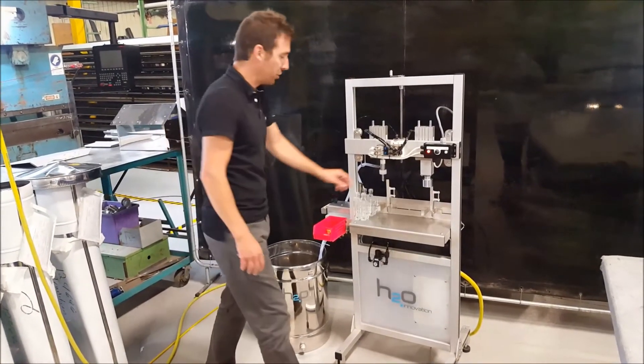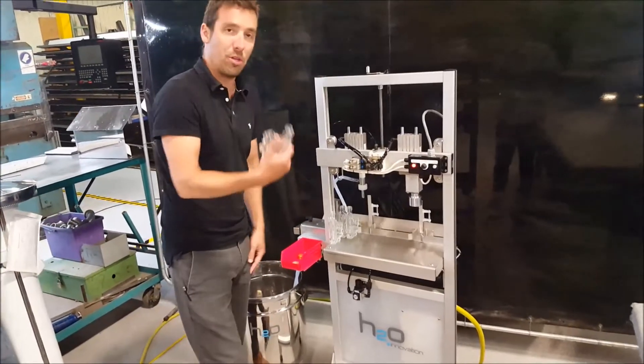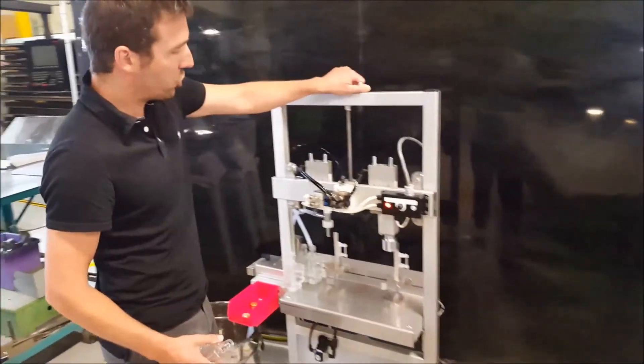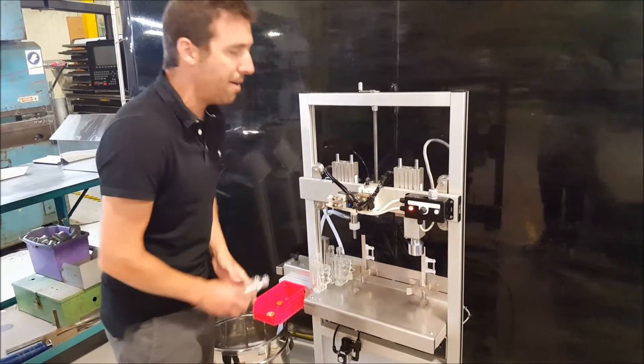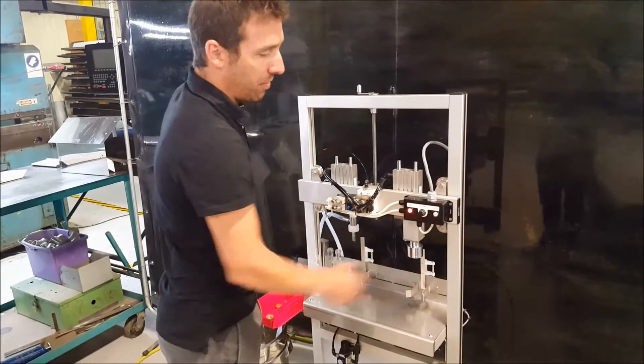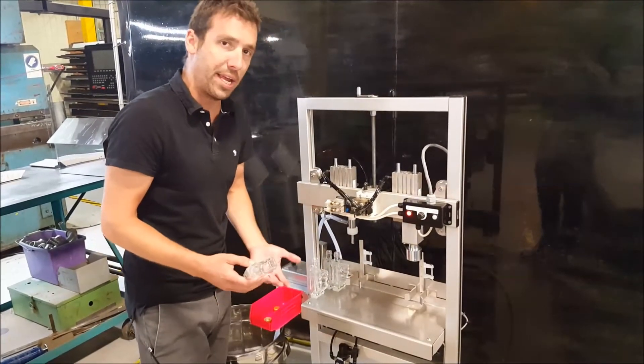So let me show you how it works. The first thing you have to do when you have a new bottle, you need to adjust the height of the table and then adjust the skis right here, and then you press that button. That button is actually a learning procedure.